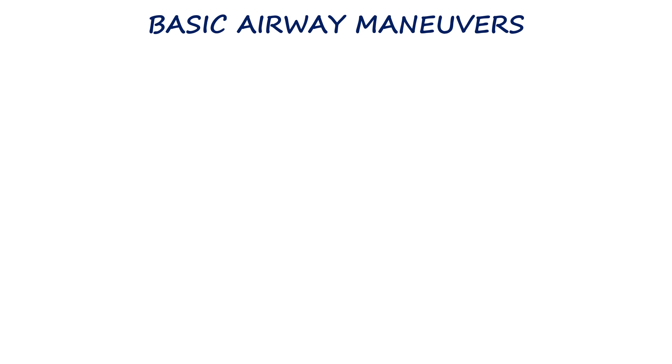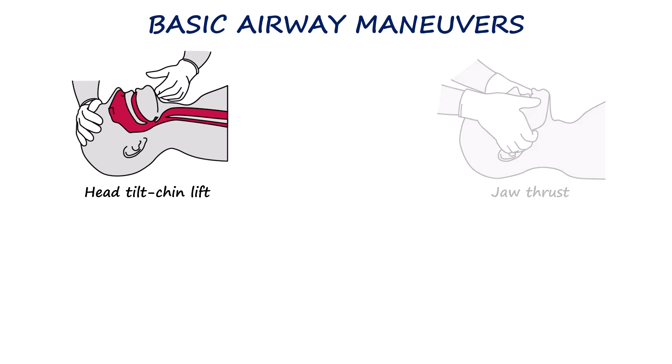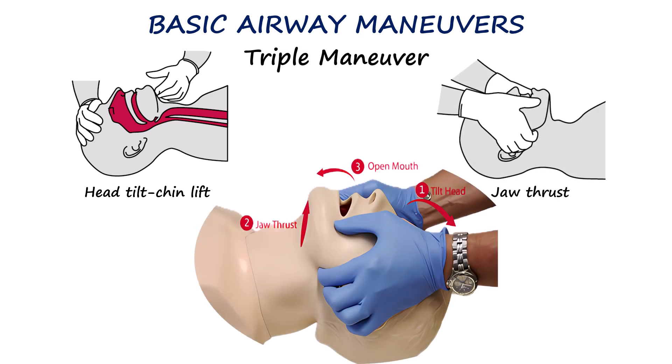Although the head tilt-chin lift and the jaw thrust are two separate airway maneuvers, they can also be performed together in combination. This is known as the triple airway maneuver. It involves tilting the head, performing a jaw thrust, and opening the mouth. The triple airway maneuver is considered the most effective manual method of opening the airway during resuscitation, before the placement of airway adjuncts or the use of bag valve mask ventilation, provided there is no suspicion of cervical spine injury.